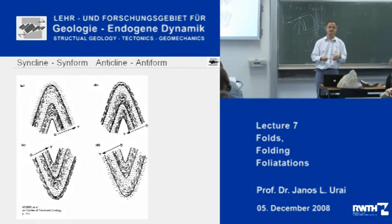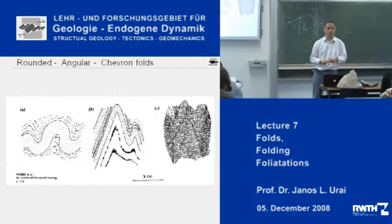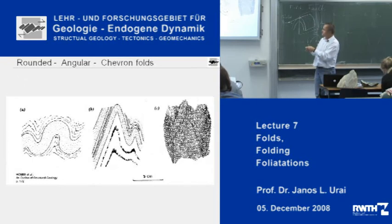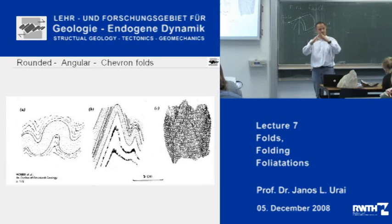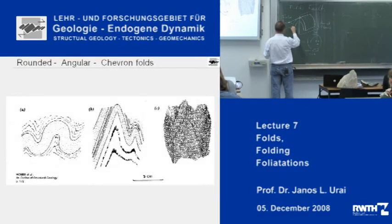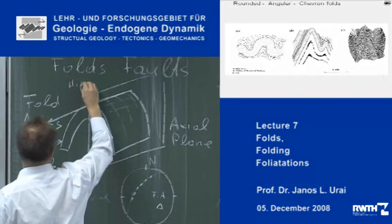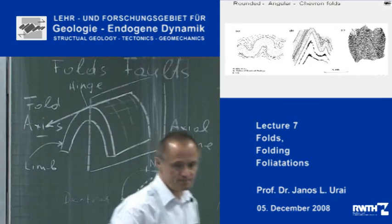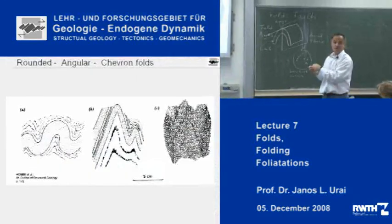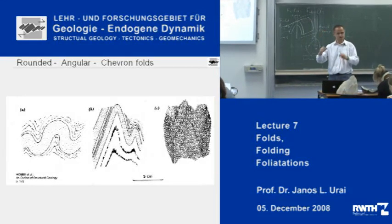Now we have to come up with ways to describe how folds are shaped. Folds where the layer boundary is very gently curved and the curvature is rather continuous are called rounded folds. Then there are folds where the limbs are actually quite straight and there is a curved hinge — these are the fold limbs and this is the hinge. And then there are folds which are really quite sharply changing orientation, and they are called chevron folds.